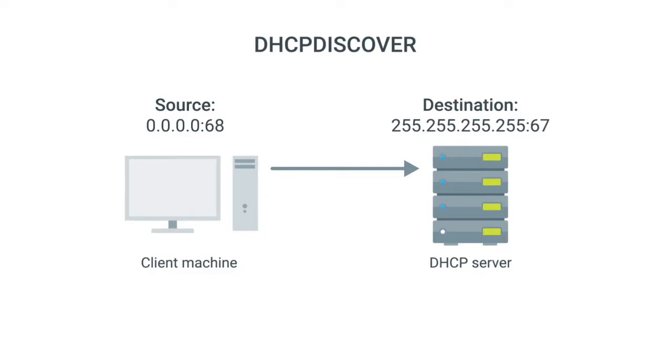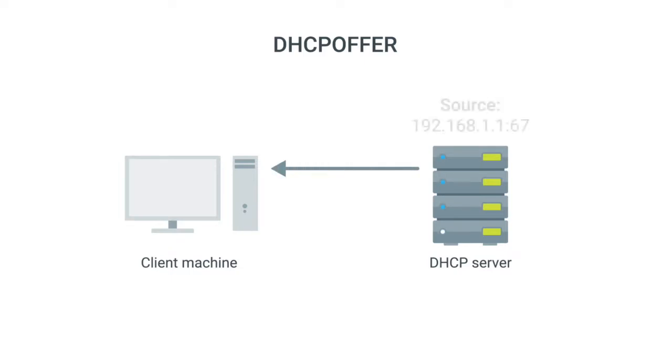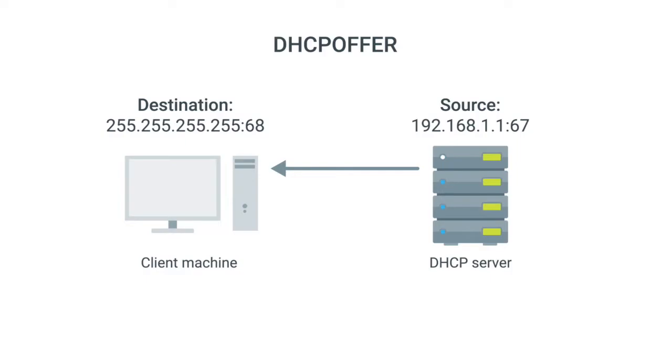This broadcast message gets delivered to every node on the local area network, and if a DHCP server is present, it receives this message. The DHCP server then examines its own configuration and makes a decision on what IP address to offer to the client, depending on whether it's configured for dynamic, automatic, or fixed address allocation. The response is sent as a DHCP offer message with a destination port of 68, a source port of 67, a destination broadcast IP of 255.255.255.255, and its actual IP as the source. The original client recognizes this message was intended for itself because the DHCP offer includes the MAC address of the client that sent the discover message.